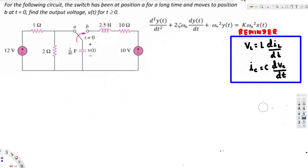In this video we are going to see an example of a second order circuit. In this particular problem we are asked to find out the voltage across the capacitor. The question states: the switch has been at position A for a long time and moves to position B at T equals zero. Find the output voltage V of T for T greater than or equal to zero.